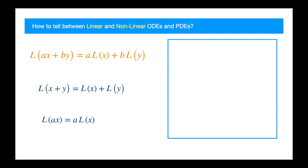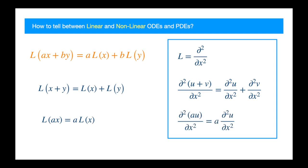Let's consider the second partial derivative. We know the derivative of the sum of two functions is the sum of their derivatives. So that is the first condition ticked. And we know we can take a constant out of the derivative. So that's the second condition ticked as well.